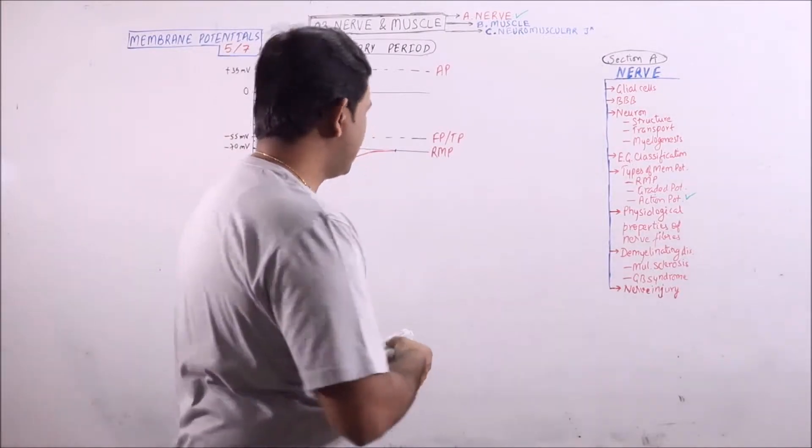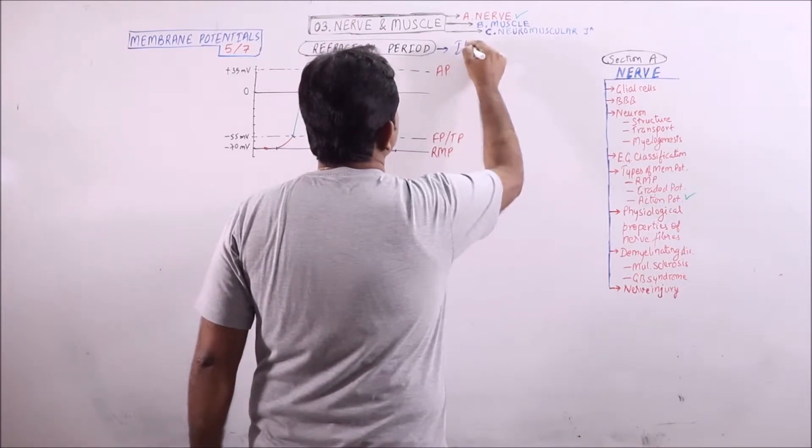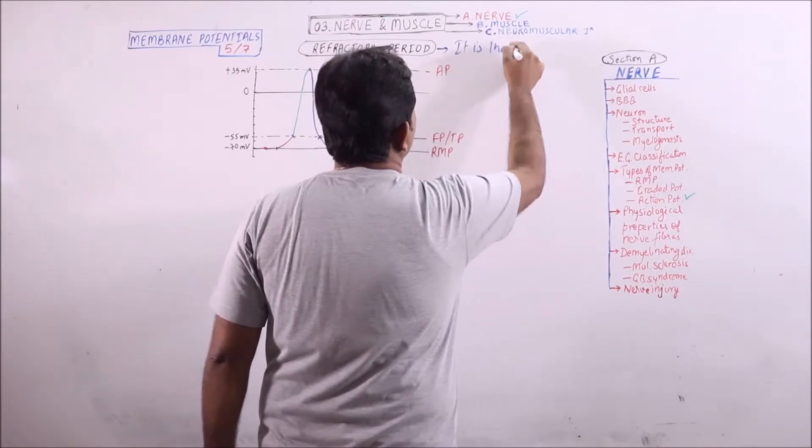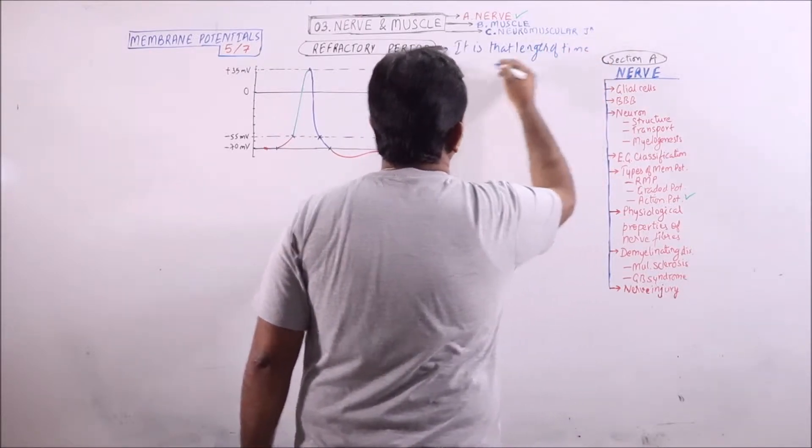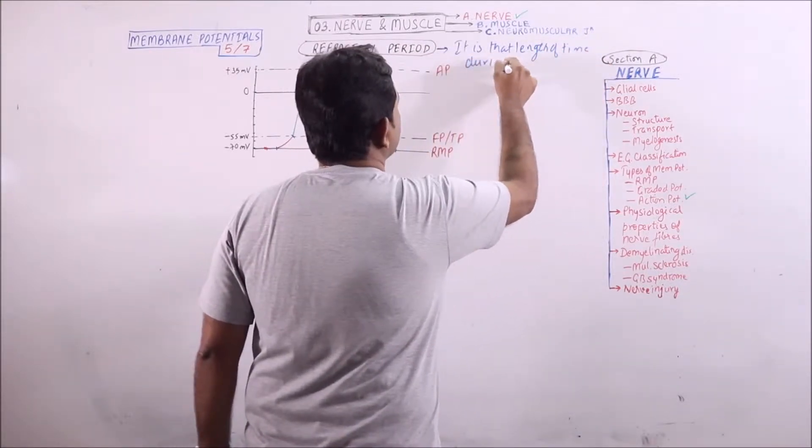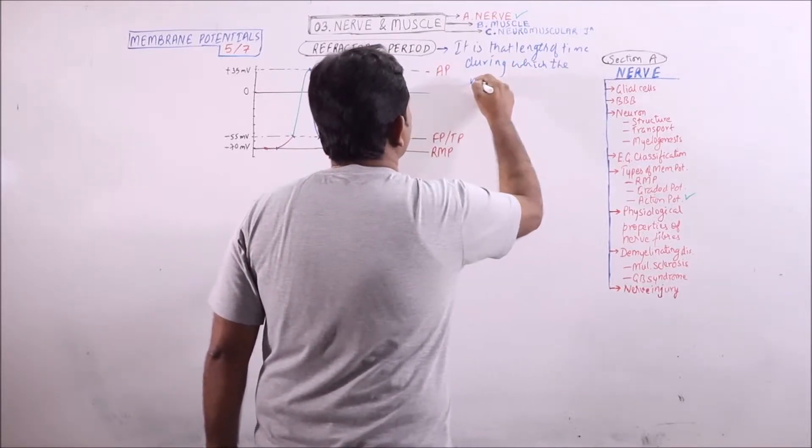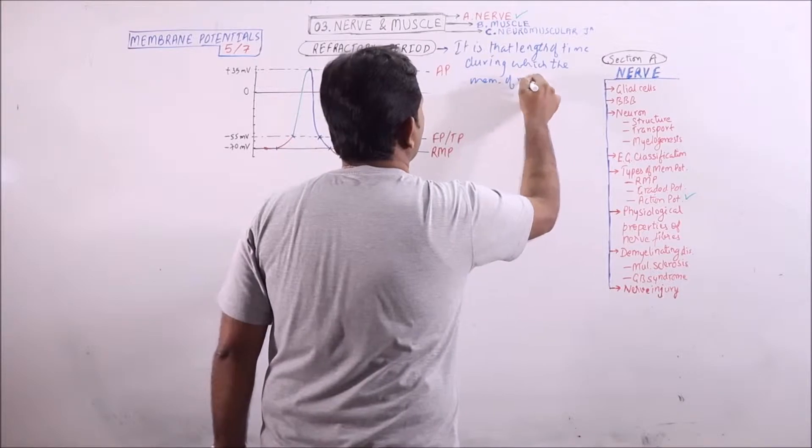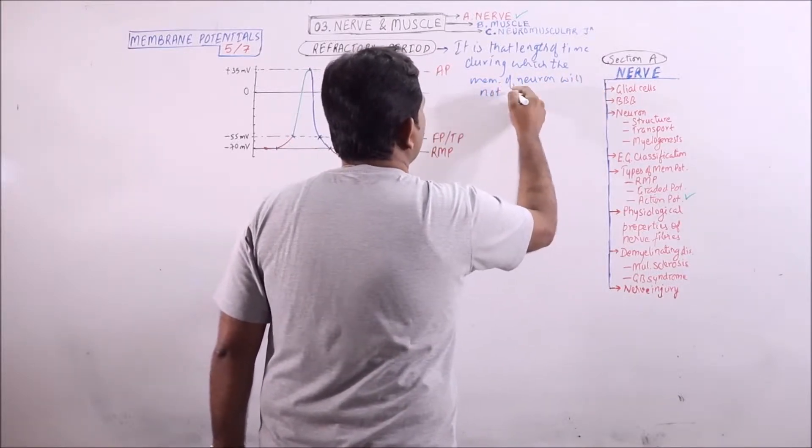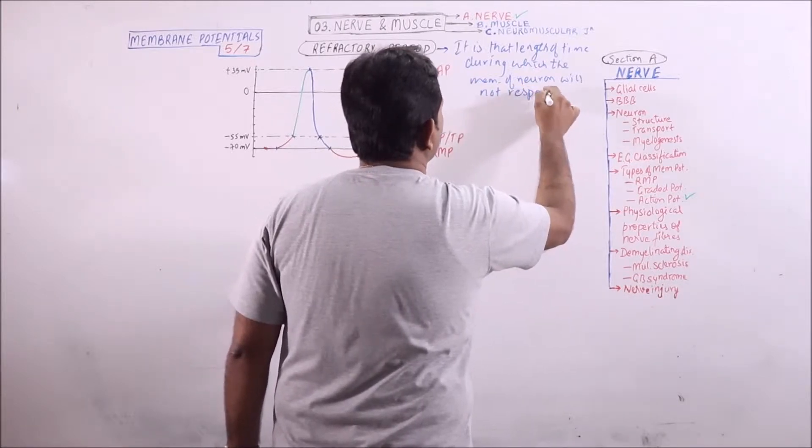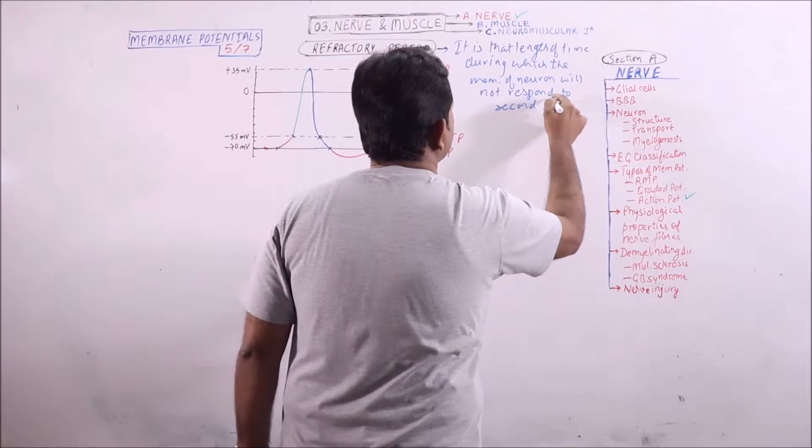What is refractory period? It is that length of time during which the membrane of a neuron will not respond to a second stimulus.